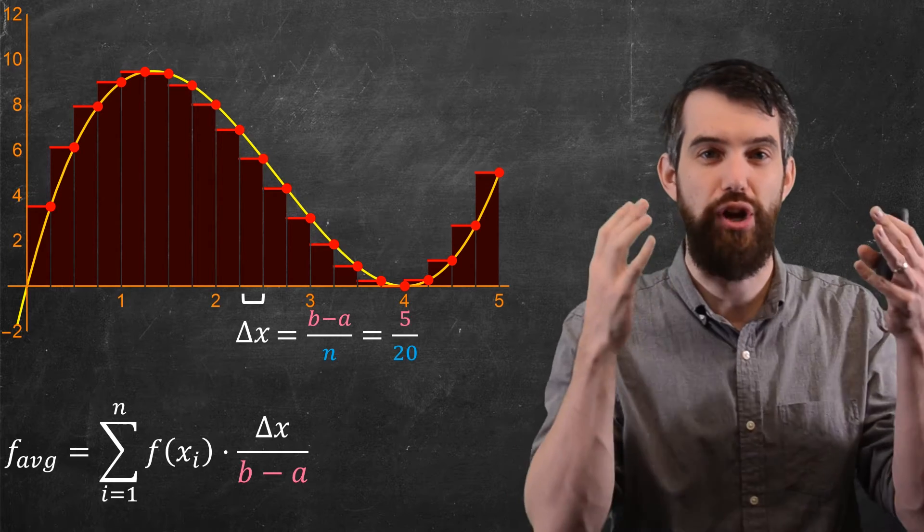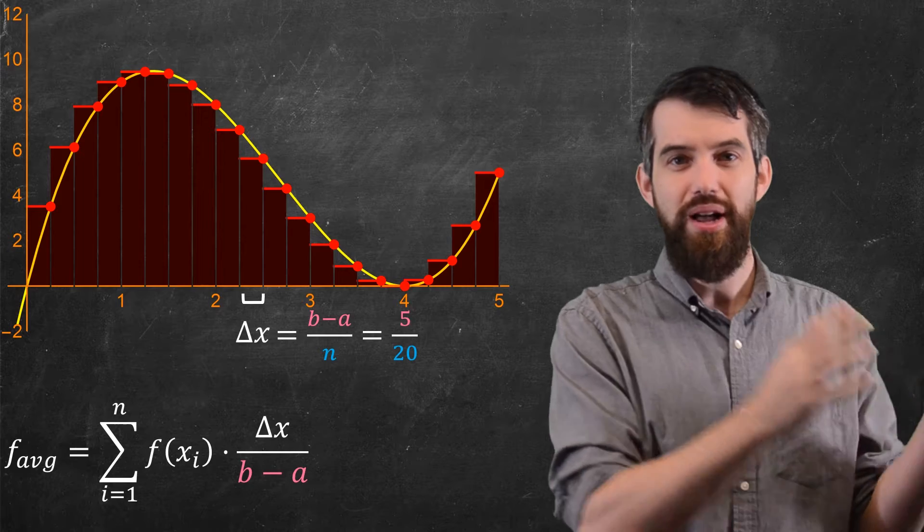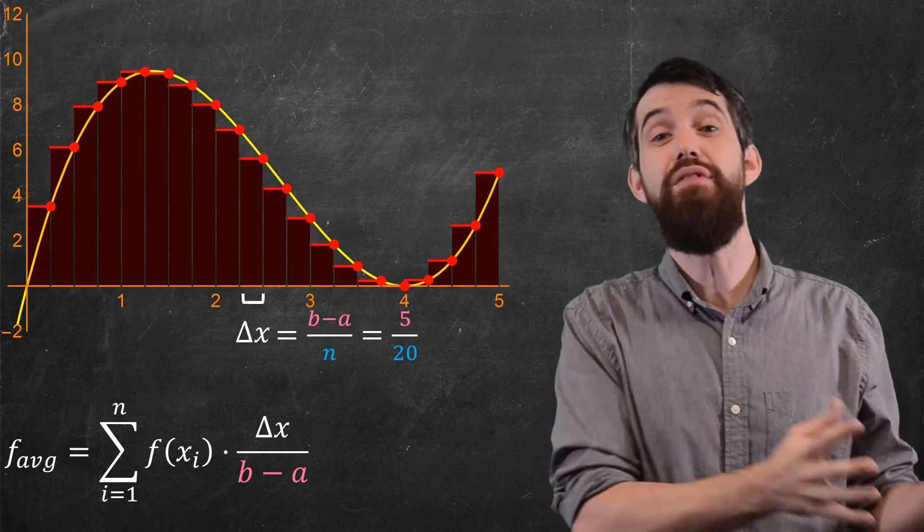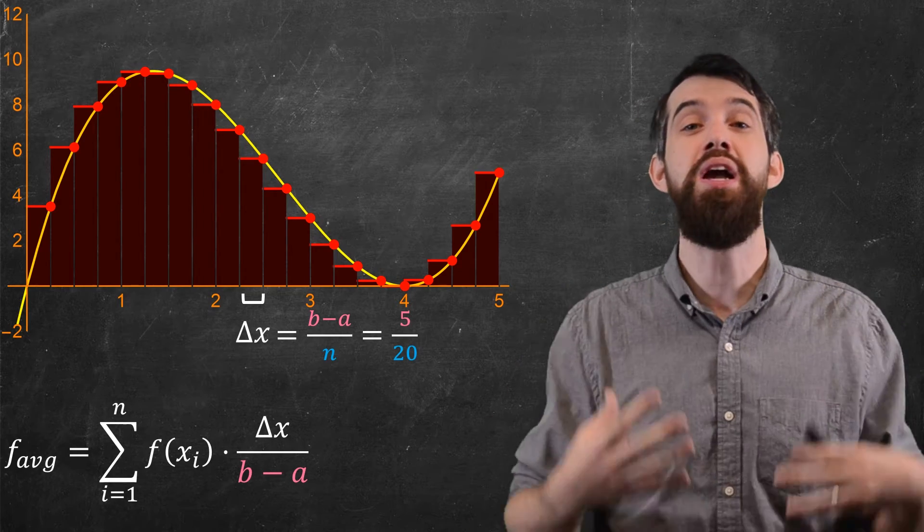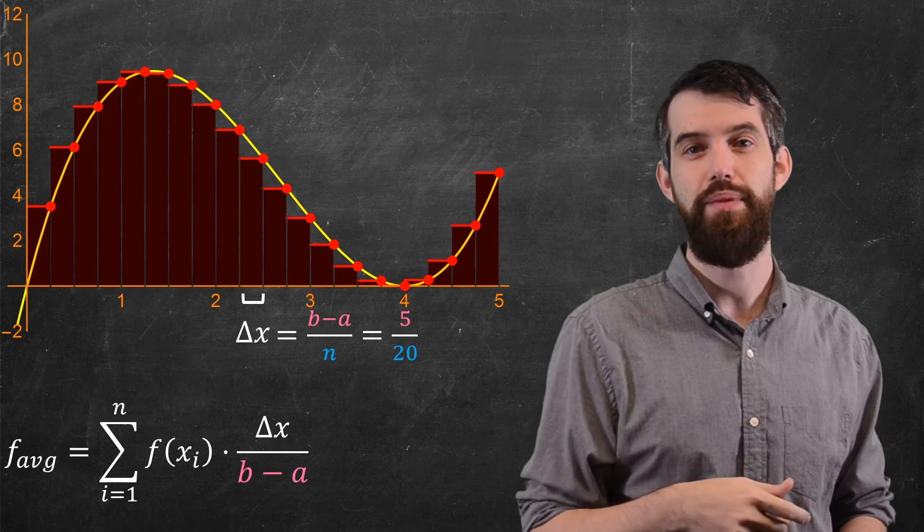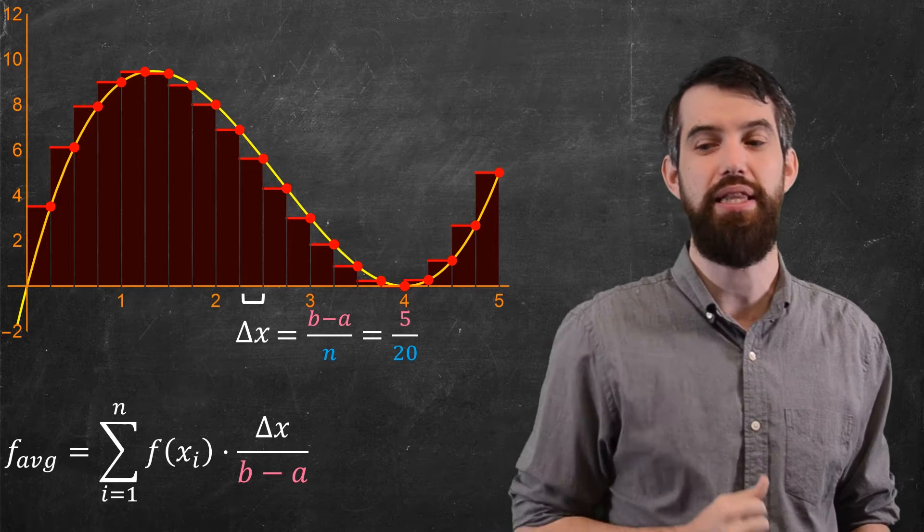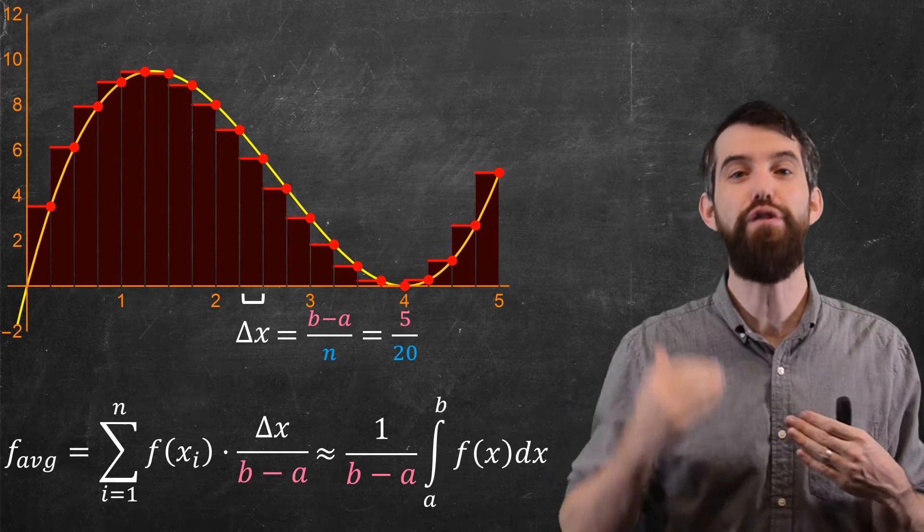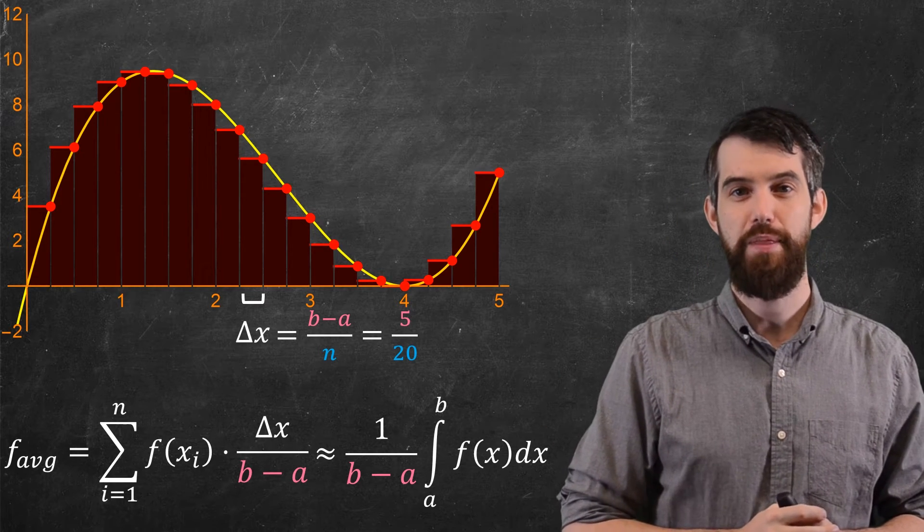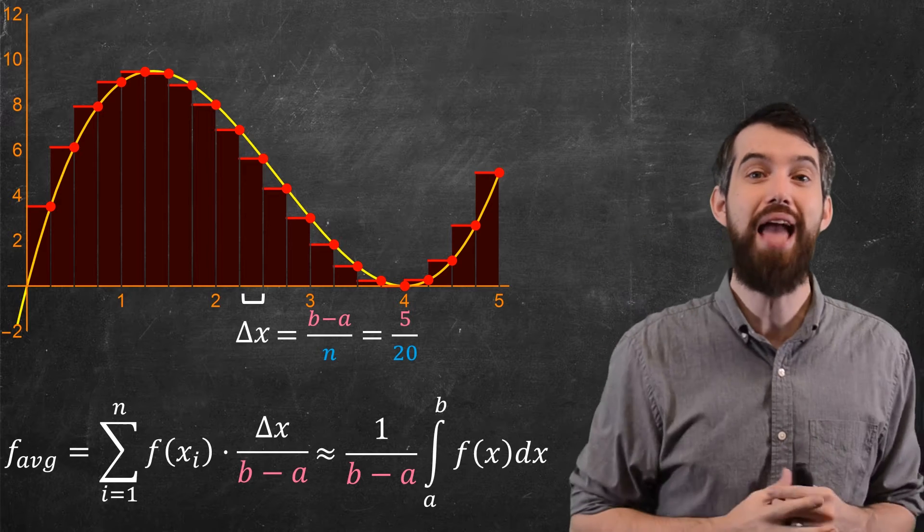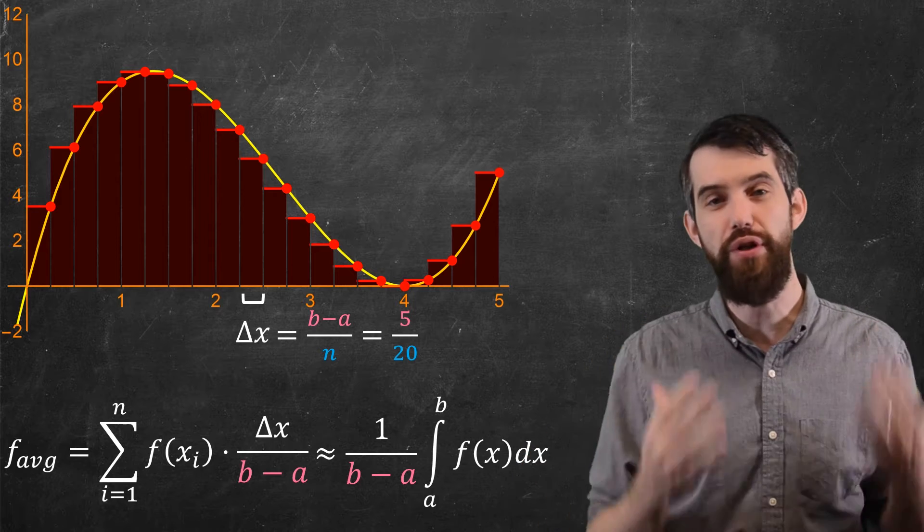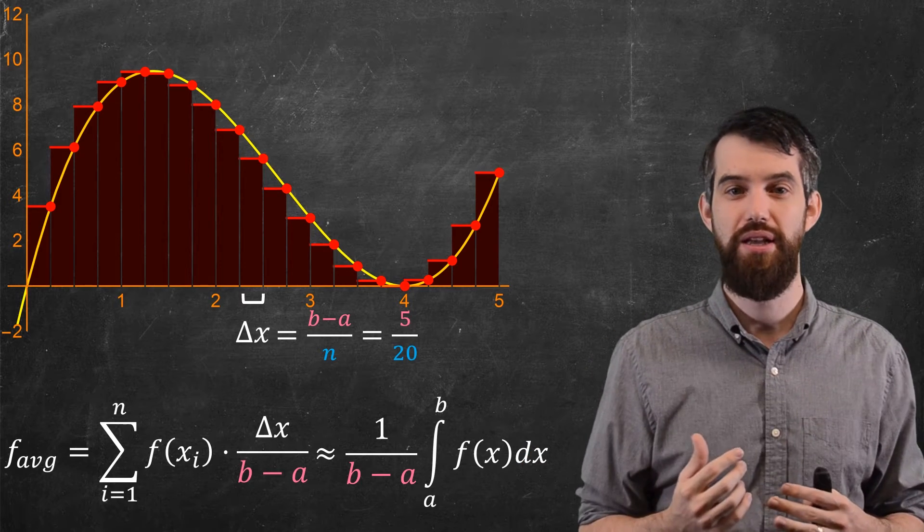Well, now this should look really familiar, because a sum of f of xi's delta x, we've seen that before. The sum of f of xi delta x is just the area under the curve. This is the definition of the integral in the limit as n goes to infinity. So if I just do a finite approximation, this is approximately going to be the integral from a up to b of f of x dx, but I have to divide out by the b minus a. So there it is. There is my average value formula for a curve. It is going to be 1 over b minus a times the integral under the curve from a to b of f of x dx.